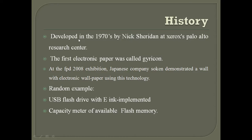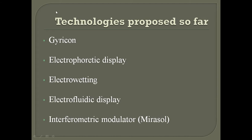The first electronic paper was called Gyricon. At the FPD 2008 exhibition, Japanese company Soken demonstrated a wall with electronic wallpaper using this Gyricon technology. There were many examples, such as a USB flash drive with e-ink implemented, featuring a capacity meter for available flash memory. Technologies proposed so far are Gyricon, electrophoretic display, electrowetting, electrofluidic display, and interferometric modulator, also called Mirasol.